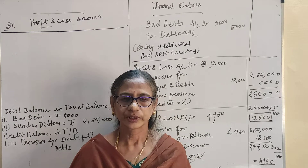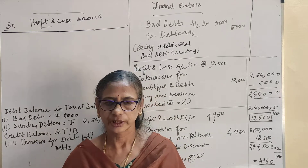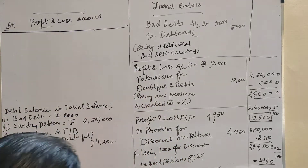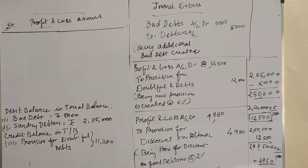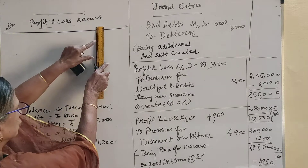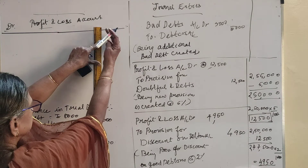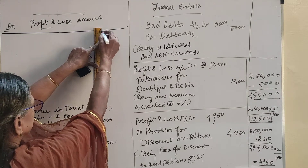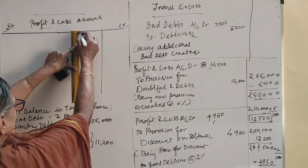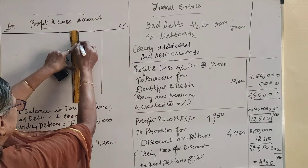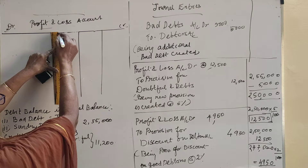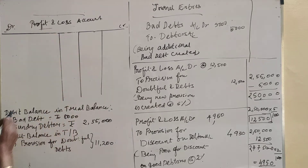Now, let us do the position in the profit and loss account. Profit and loss account, debit side we are writing. Let us draw — this is the credit side, the CR side. Now, we are going to work out like this. Two columns we will use.